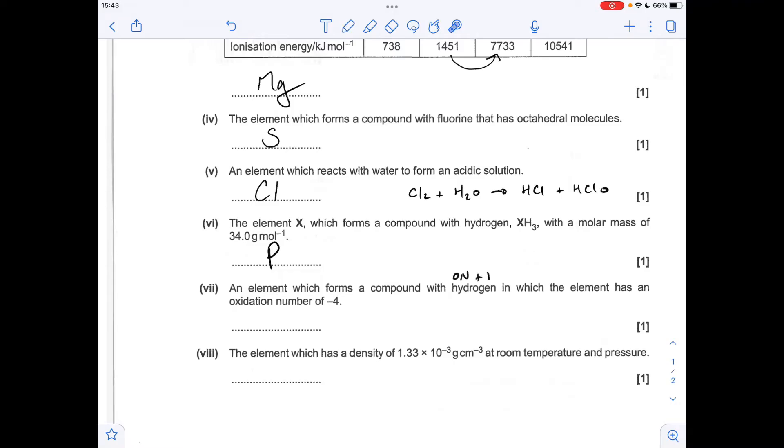Part seven now, so an element that forms a compound with hydrogen, where the element's got an oxidation number of minus four, well, hydrogen has an oxidation number of plus one, unless it's bonded to a metal, so to get an oxidation number of minus four, we're going to need carbon.